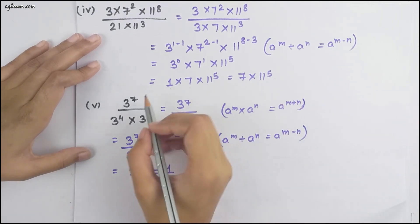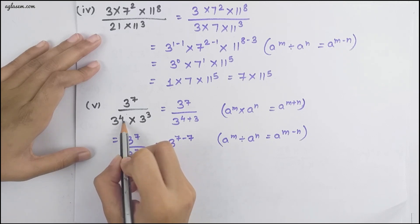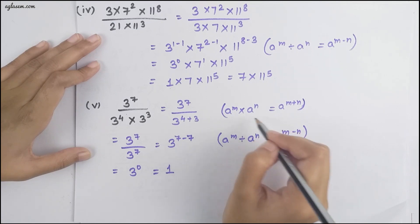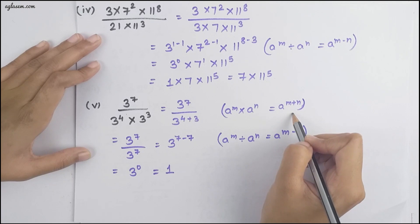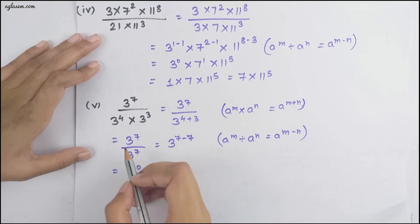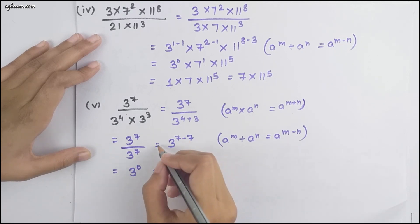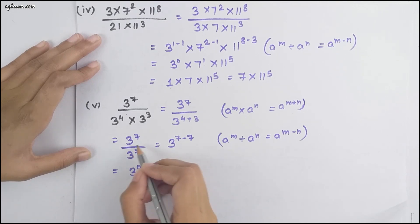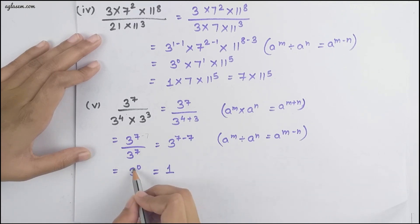Moving to the fifth part: 3⁷ ÷ (3⁴ × 3³). First, since the denominator bases are the same, powers get added: 3⁴ × 3³ = 3⁷. So we have 3⁷ ÷ 3⁷ = 3^(7−7) = 3⁰ = 1.